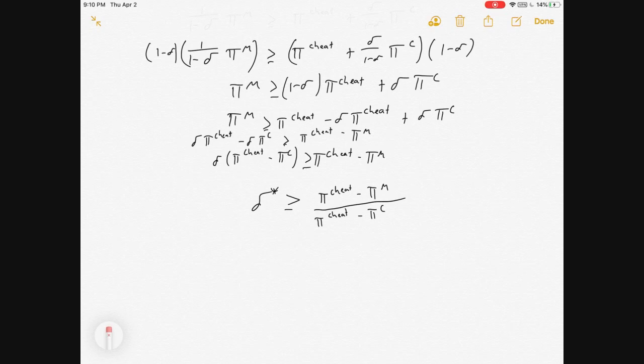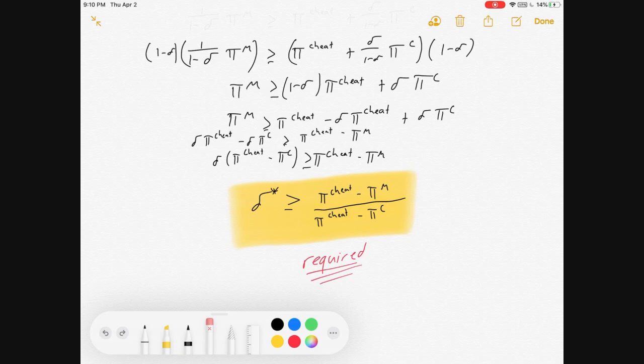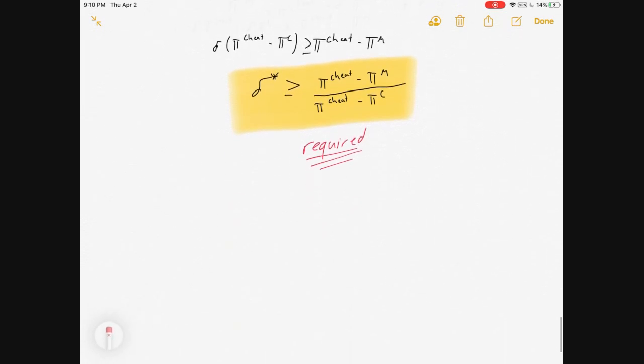I know I went pretty fast through there, but this is a video, so you can pause if you need to see all the steps. That delta, if delta is greater than that fraction, then this firm sees the grim trigger strategy as their best option. So, that is a required situation in order for this to be in equilibrium.